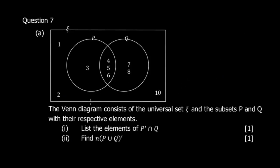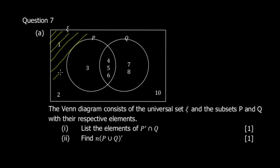Question 7: the Venn diagram has a universal set and subsets P and Q with their respective elements. Part A asks for P complement intersect Q. P complement means all elements outside of P — this entire region here outside of P.